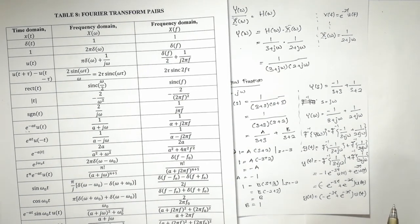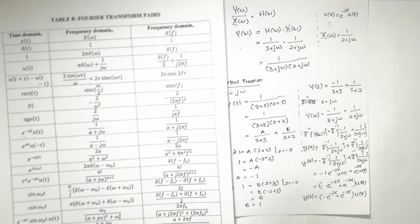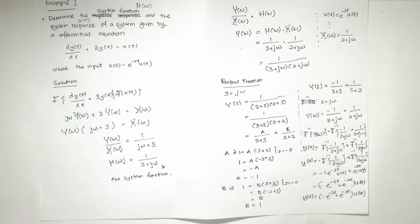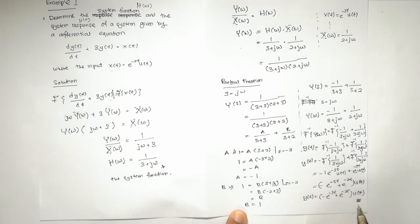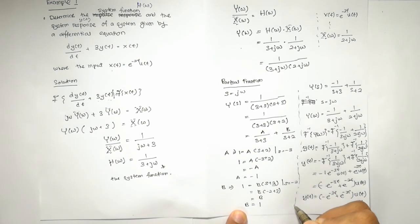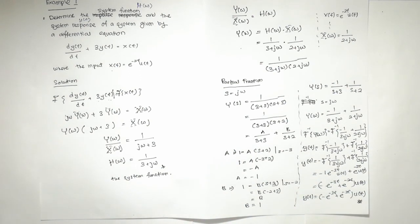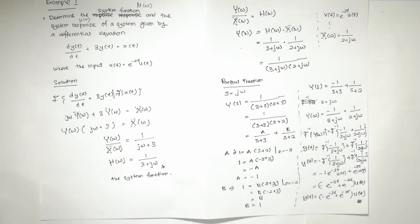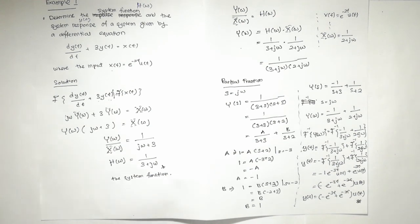This is our system response Y(t). Hopefully you understand how to use Fourier Transform to find the system function and response of an LTI system given in LCCDE — Linear Constant Coefficient Differential Equation. Thank you for watching and bye!